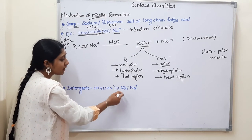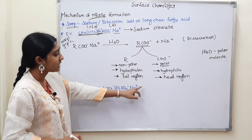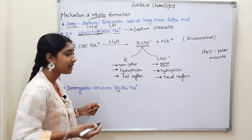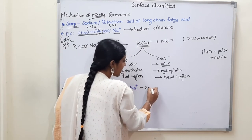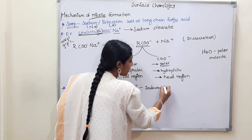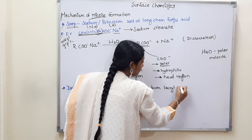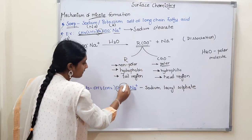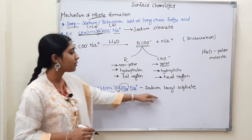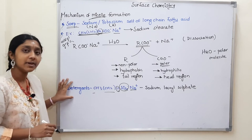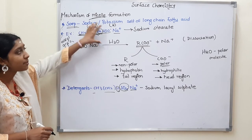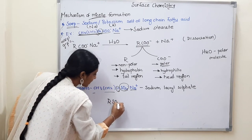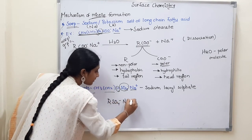For detergents — the example is CH₃(CH₂)₁₁SO₄⁻Na⁺. This is a detergent. What is the common example? Sodium lauryl sulphate — that is one example of detergents. So detergents have a general form: R–SO₄⁻Na⁺. When it breaks apart: R–SO₄⁻ is the negative value and Na⁺ is the positive value. These two separate — R–SO₄⁻ is the same as the R alkyl group.